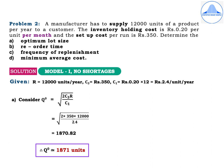Problem 2: A manufacturer has to supply 12,000 units of a product per year to a customer. The inventory holding cost is Rs.0.20 per unit per month and the setup cost per run is Rs.350. Determine the optimum lot size, the reorder time, frequency of replenishment and minimum average cost. This problem will cover all the different types of calculations in Model 1.